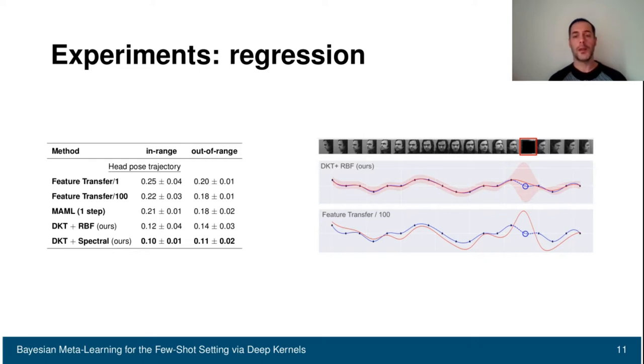On the right, you can see an experiment for uncertainty quantification. In this case, we are corrupting one of the images with a red frame. And then we want to see what's the prediction at that location. For feature transfer, we have a wrong prediction for that location. While for DKT, we have a better prediction. And more importantly, we have a large variance indicating uncertainty in the prediction.